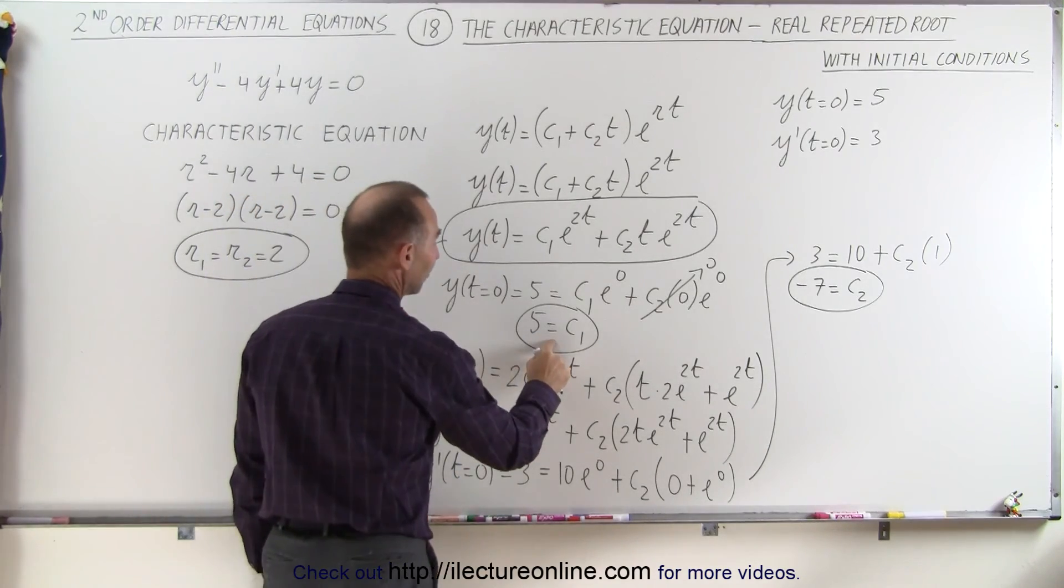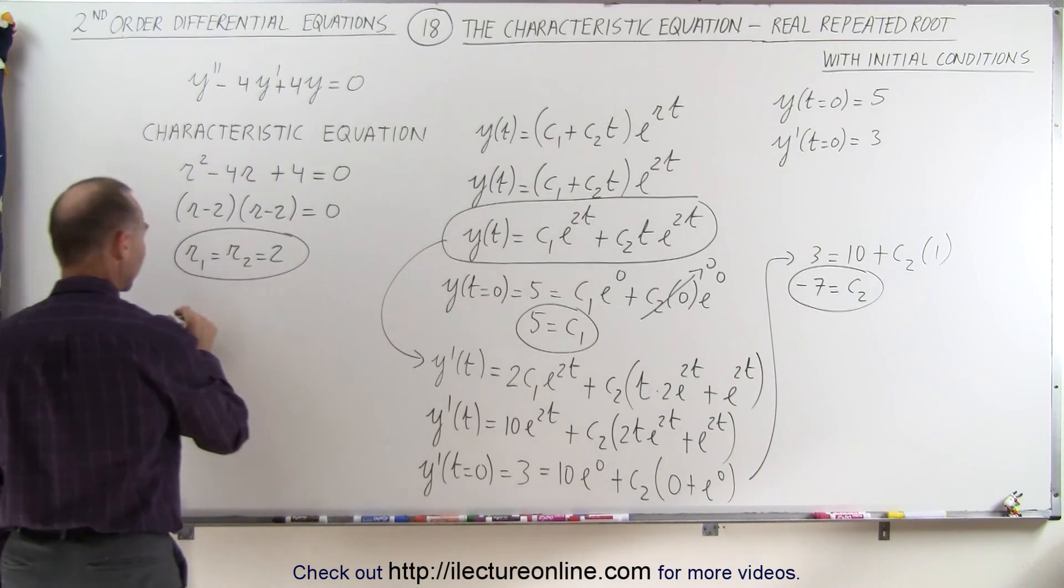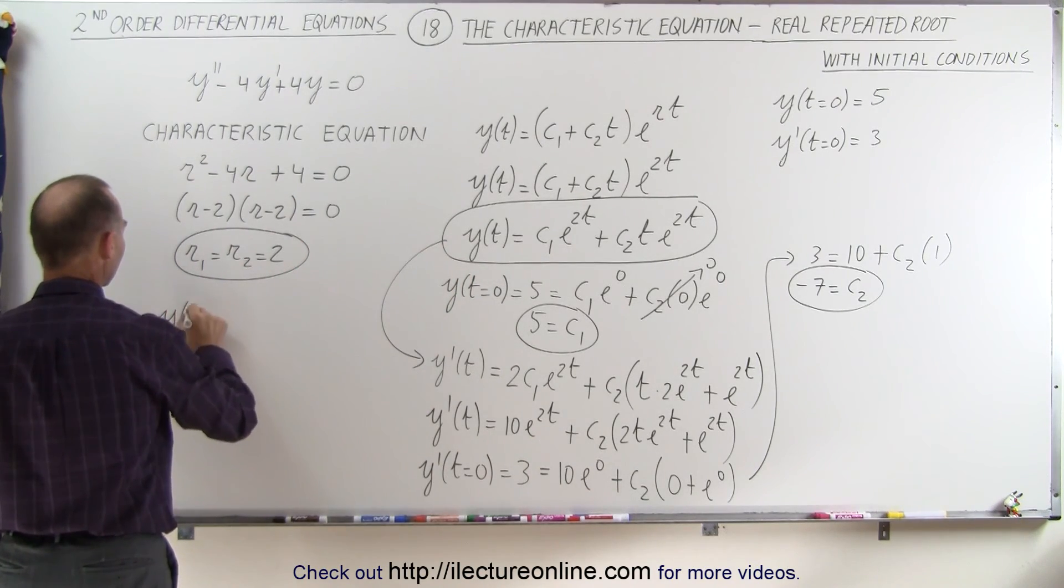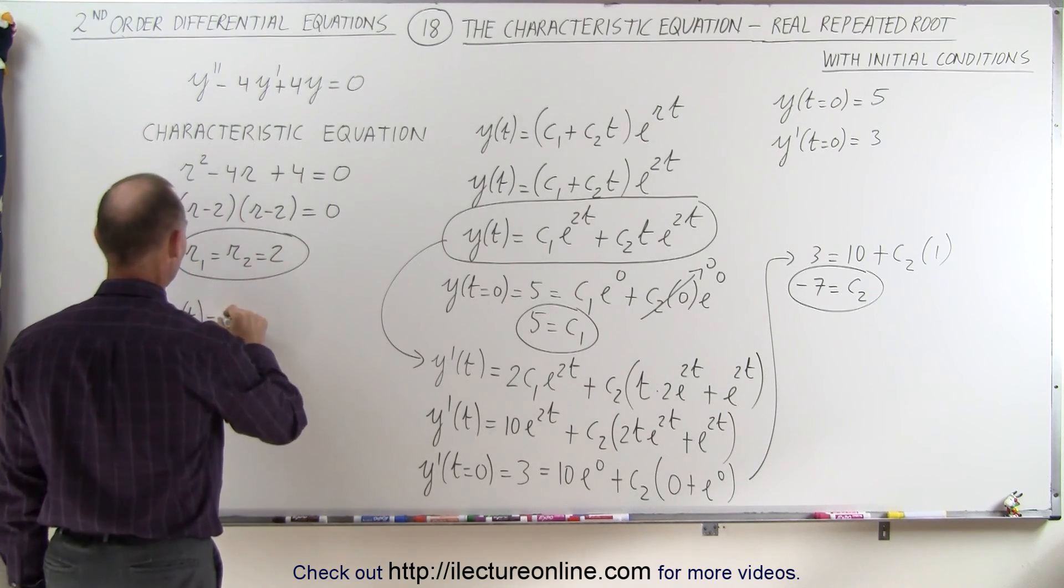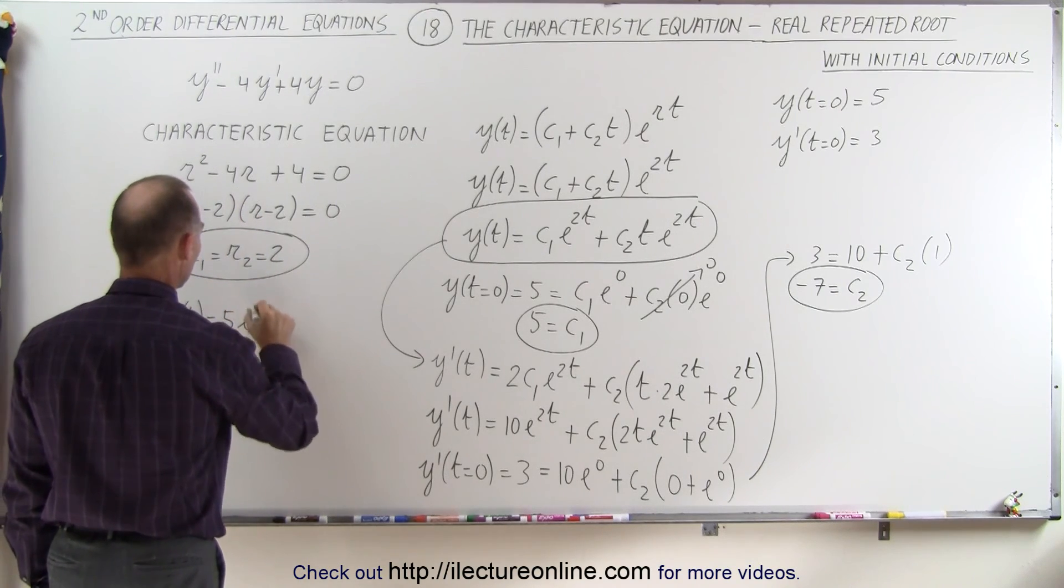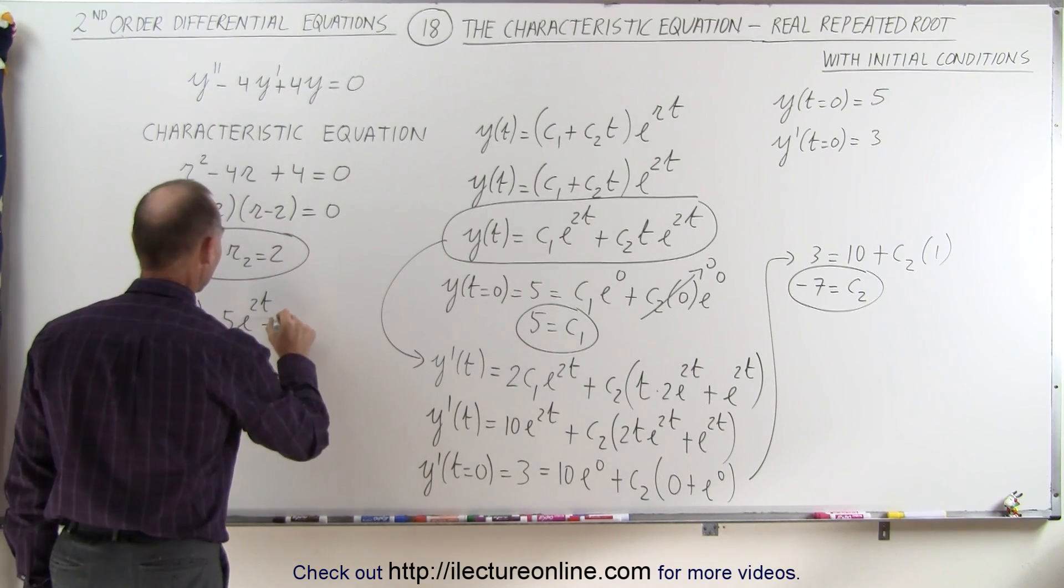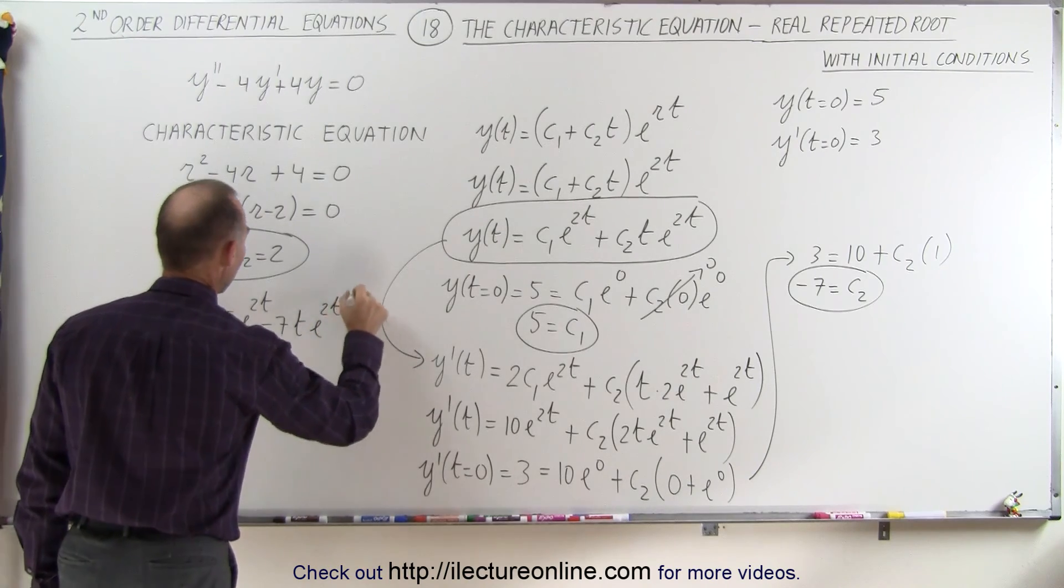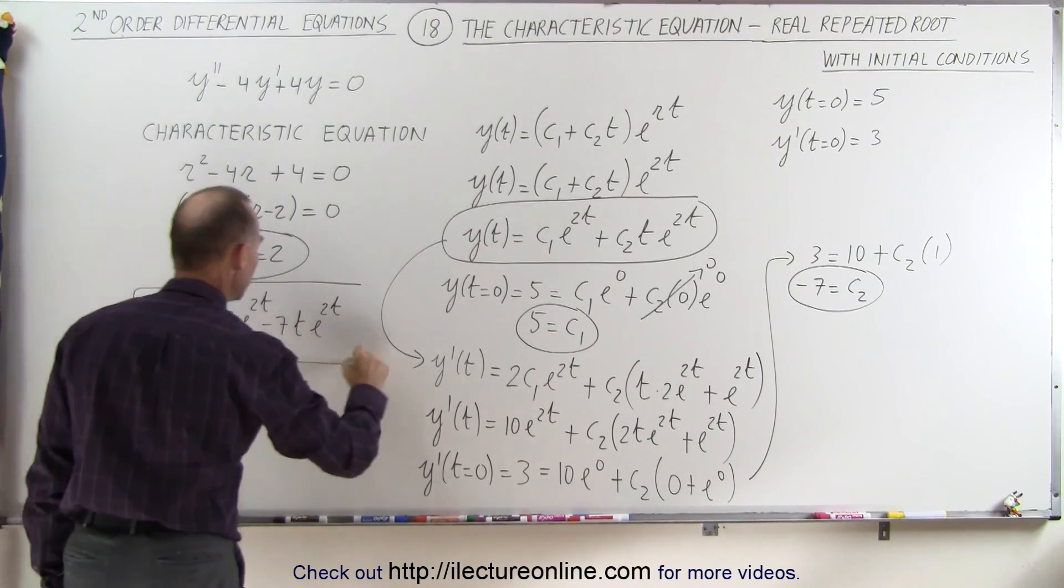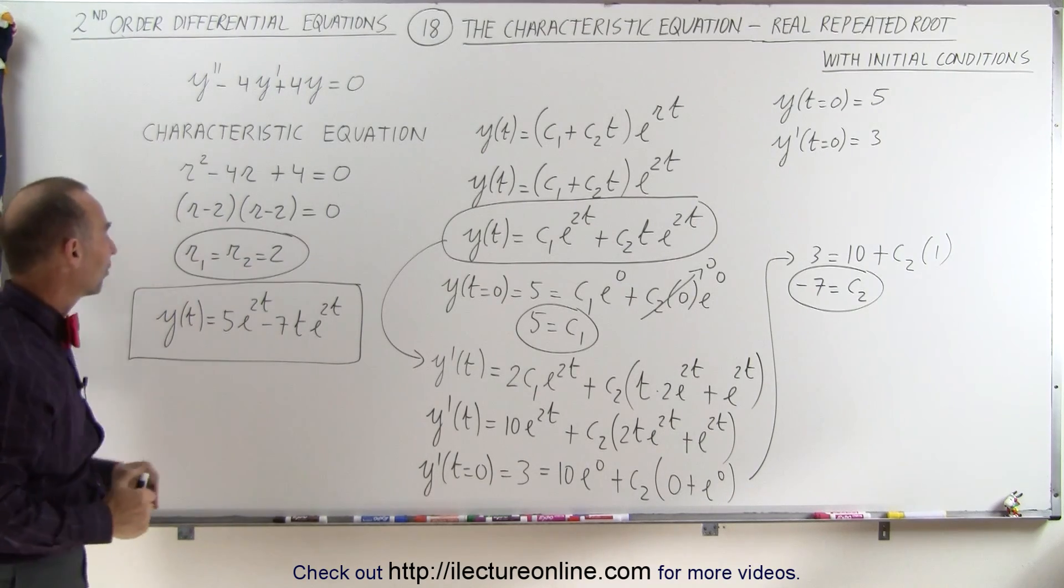We now plug in 5 for c1 and minus 7 for c2. And our equation then becomes y as a function of time is equal to c1, which is 5 e to the 2t, plus c2, which is a minus 7 t e to the 2t. And this now becomes our one and exact solution to our original differential equation.